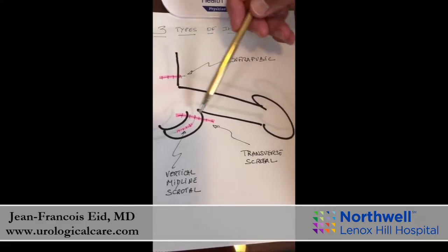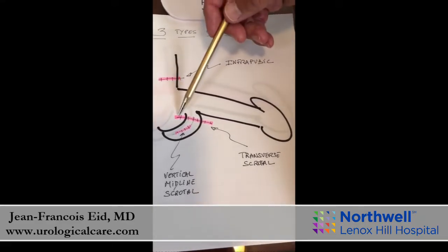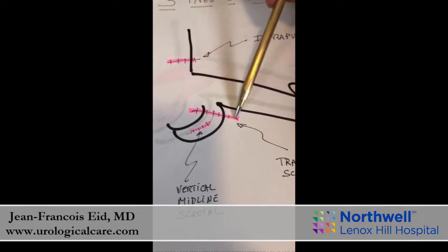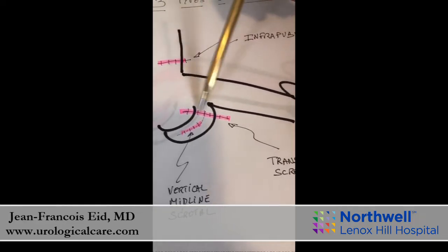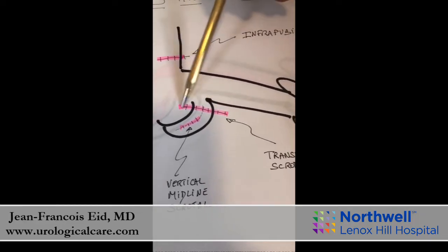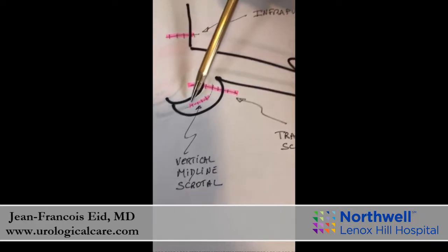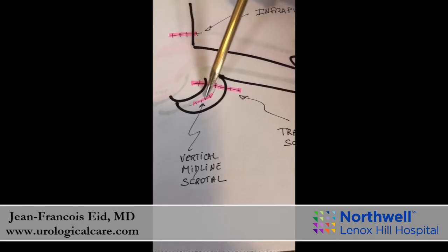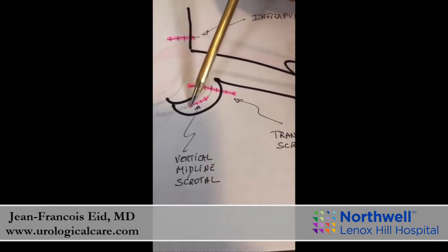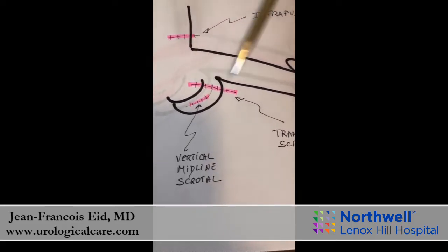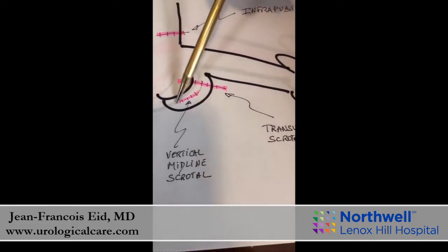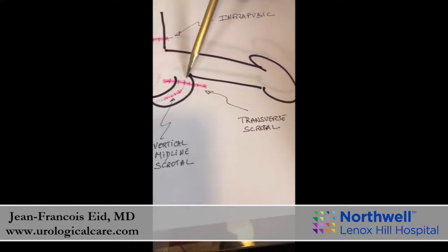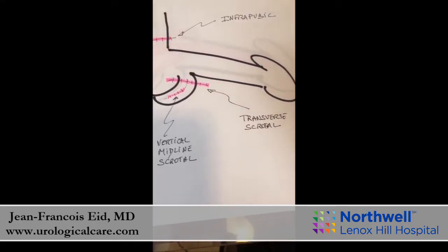Then you have the transverse incision that is below the penis into the scrotum, and finally what we call the vertical penoscrotal incision, or scrotal incision, which is on the raffae — the line between the two testicles.